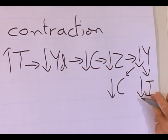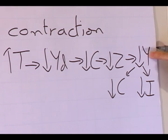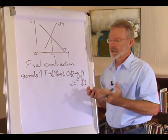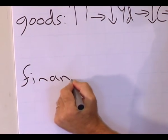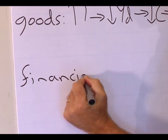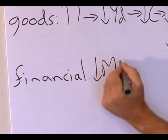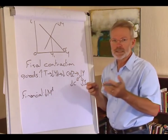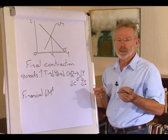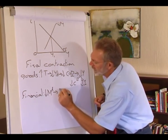The level of output does not only impact consumption and investment spending — it also has an impact on the financial market. The decrease in output leads to a decrease in the demand for money. We now have an excess supply of money, so we're going to buy bonds and the price of bonds will increase.